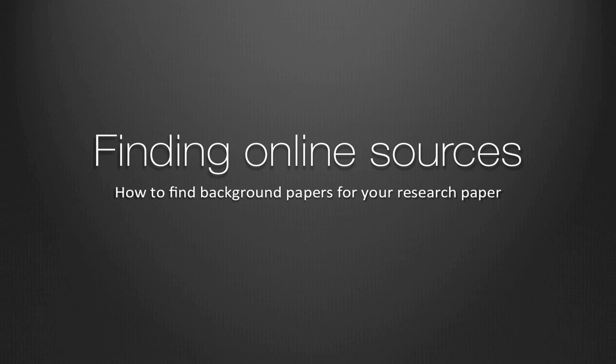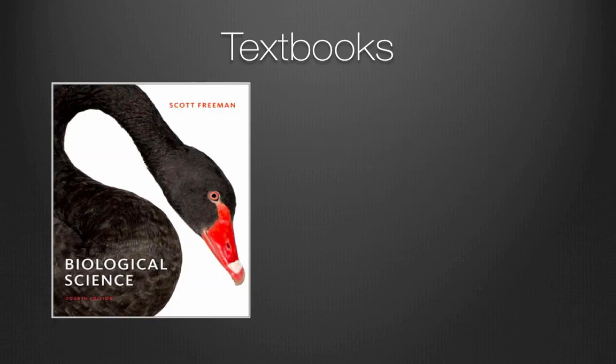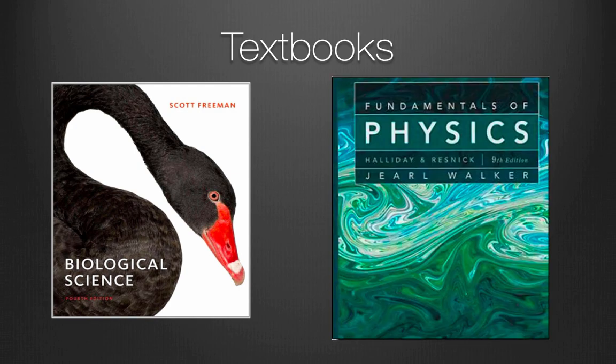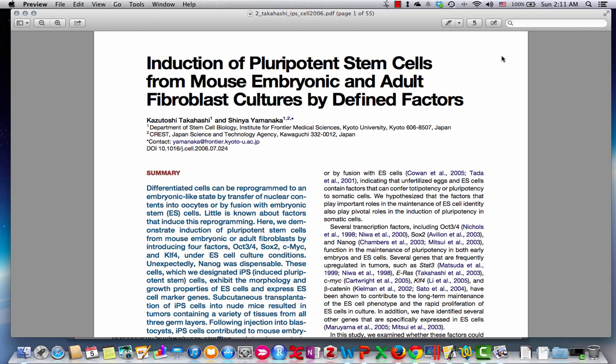In this video, I'm going to show you how to find background information for your research paper. Mostly we'll be talking about online resources, but you can also use textbooks, like your high school textbooks. But textbooks are not original research papers. When you write a research paper, you need to make sure that your idea is new and you need to connect it to other research in the field. So you need to read previous research before you do your own experiment. Also, reading other research papers will help you to learn the vocabulary and the style of scientific writing. These days, it's pretty easy to find lots of previous research on the internet.